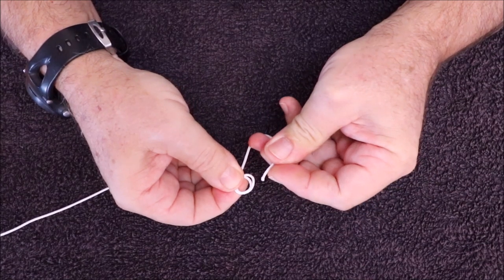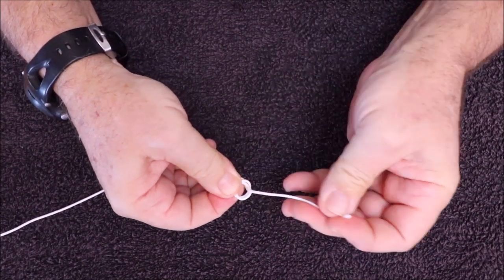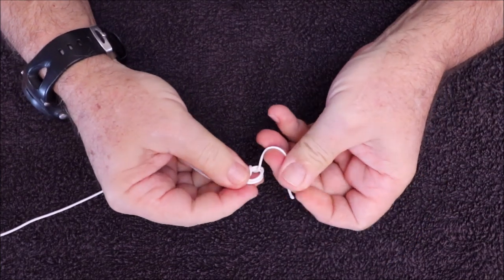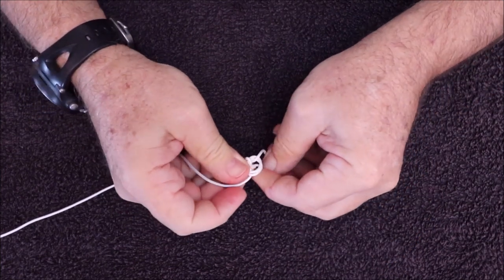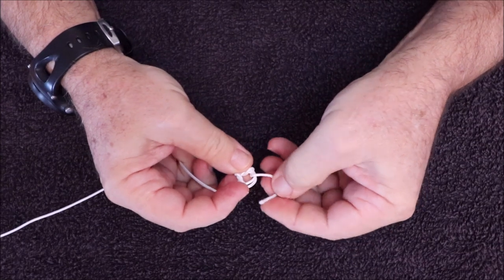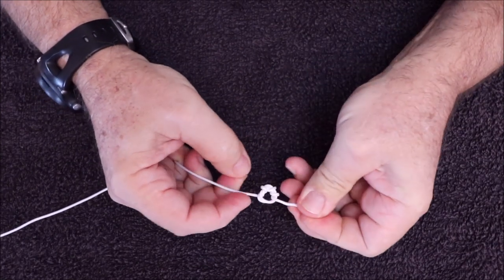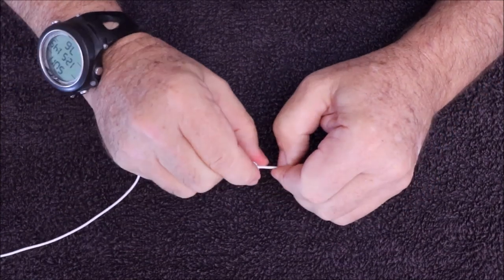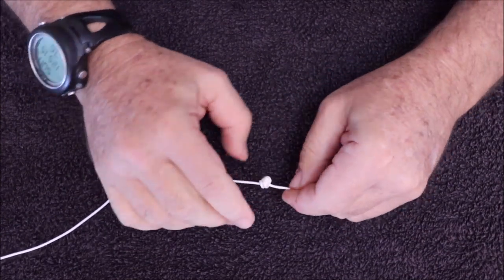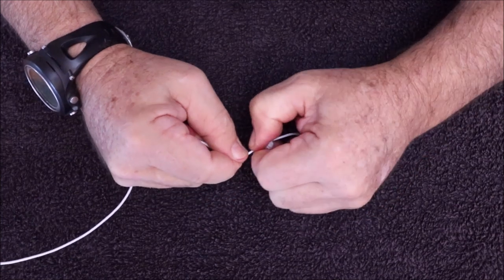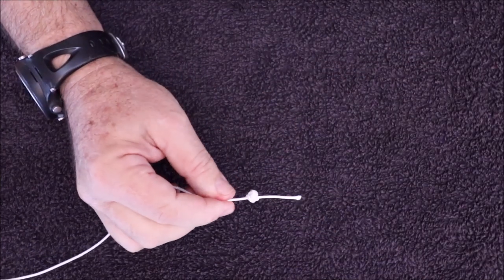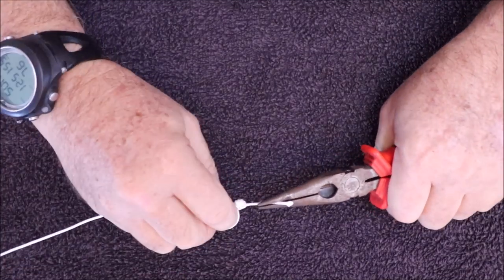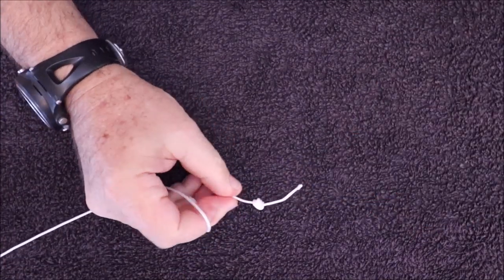Take the tag end, bring it back through, but this time we do it four times: two, three, four. When this is pulled down, it creates quite a ball. That ball is basically what you require to create the biggest diameter to enable the rubber to grip.